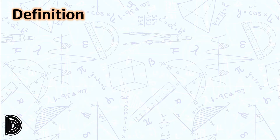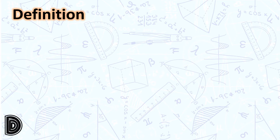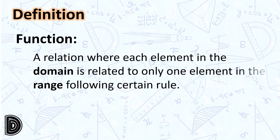Let us begin with some definitions. A relation is a rule that relates values from two different sets, usually written as a set of ordered pairs (x, y), where x is an element of the first set called the domain, and y is an element of the second set called the range. A function is a relation where each element in the domain is related to only one element in the range, following a certain rule.